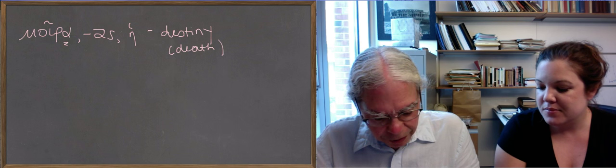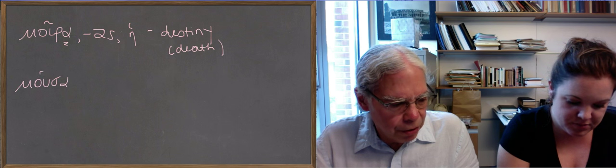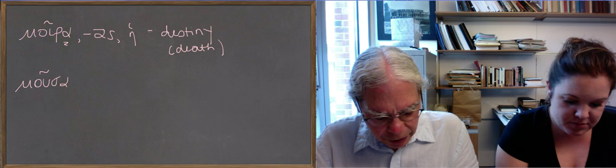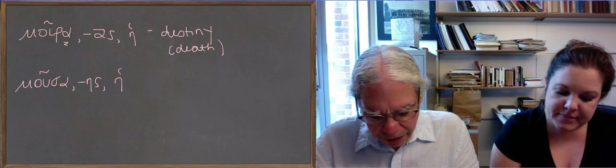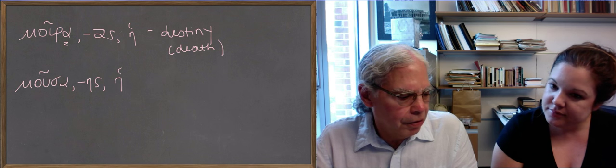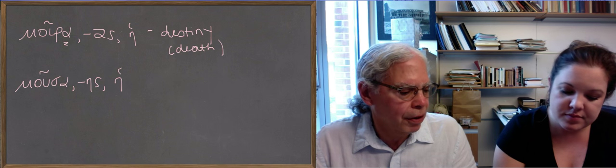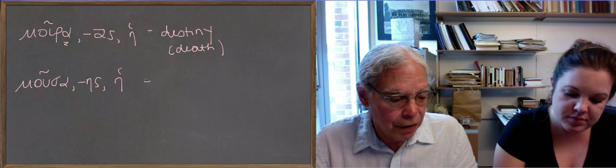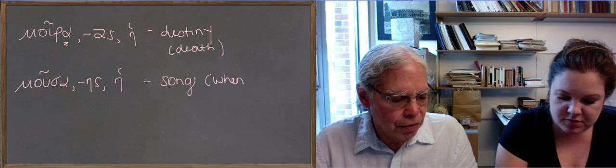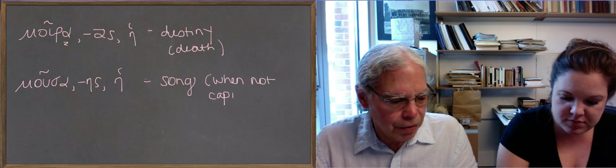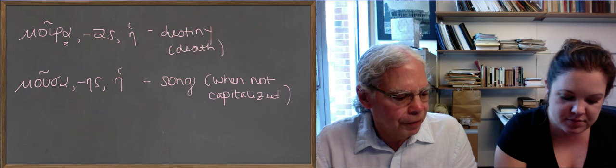The next word is mousa, which is printed with a lowercase mu. Mousa, genitive mouses. I thought it's a tau noun. And it translates it muse. When it means the muse, it's capitalized. It means a goddess. It can mean a song, and then it doesn't get capitalized. But if it's the muse, it's a person. It's a goddess. So it should get a capital letter.